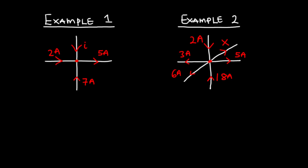In example one we have four currents either entering or leaving the junction. We have two amperes entering the junction, seven amperes also entering the junction, five amperes leaving the junction, and then we also have I entering the junction. According to Kirchhoff's Current Law, the sum of currents entering the junction should be equal to the sum of currents leaving the junction. So now let's write down the sum of currents entering the junction.